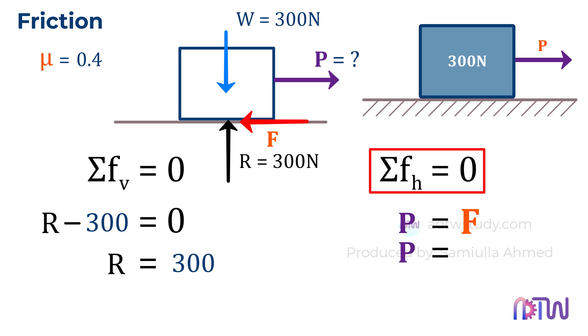Here, force F is the frictional force, which is given by the coefficient of friction mu times the normal reaction force. We know the values of both these quantities. Mu is 0.4 and the normal reaction force is 300 newtons. Therefore, after calculating, we find that the force P is equal to 120 newtons.